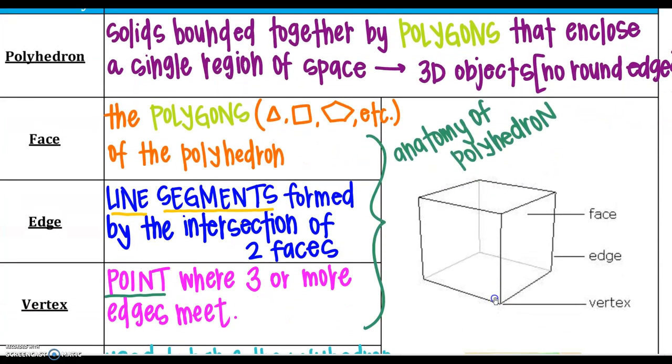Some of the anatomy of a polyhedron. The first one is called a face. So your faces are the polygons, so your rectangle, triangle, pentagon, etc. of the polyhedron. So notice where your little diagram over here points to. That is a face. An edge is a line segment formed by the intersection of two faces. So here is an edge. It is a line segment, so remember that. And then a vertex is just the point where three or more edges meet. So a point is going to be your point of intersection. So a lot of similar characteristics of just a 2D object.